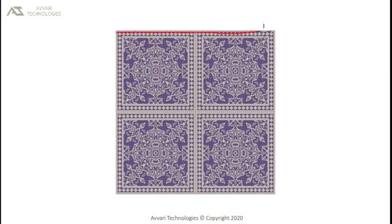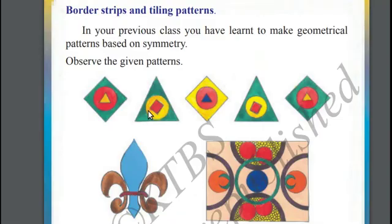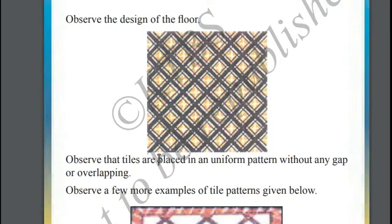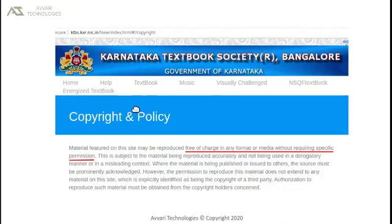Here we can notice a big square, outer square, and we can notice small squares. Sometimes these basic geometrical shapes make up a beautiful pattern. You can observe here, generally tiles are placed in a uniform pattern without any gap or overlapping.